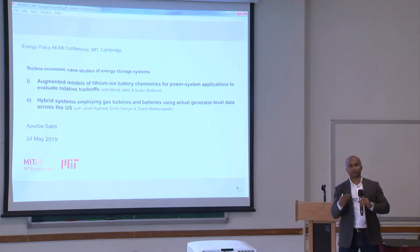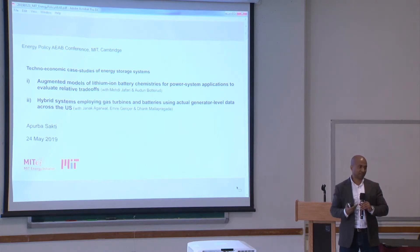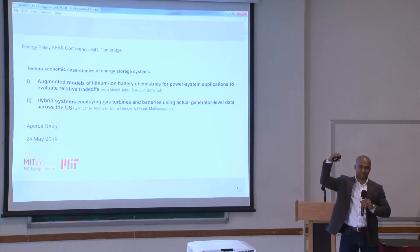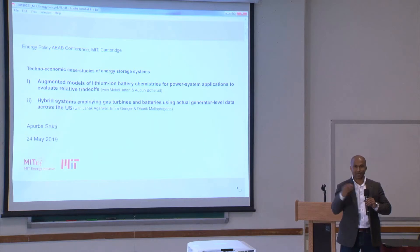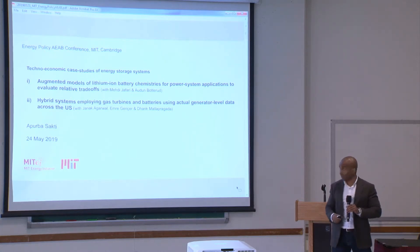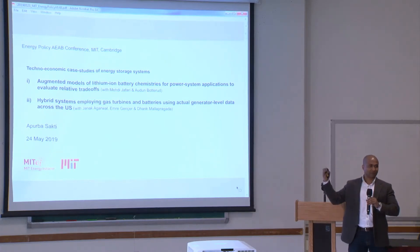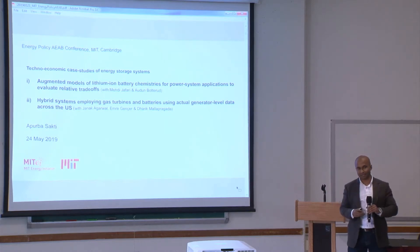For the second case study, we have generator-level data across the United States, and we're looking at situations where gas turbines are running or spinning to provide the spinning reserve service. What if you were to have a hybrid system where the battery would take up the initial ramp up, and the turbine would not have to spend money on fuel-related costs or startup-related costs? That sort of trade-off is something we are investigating as well. Unlike the previous presentation, I don't have a lot of equations — I was hoping we can discuss the general structure, and I'm happy to answer detailed questions.